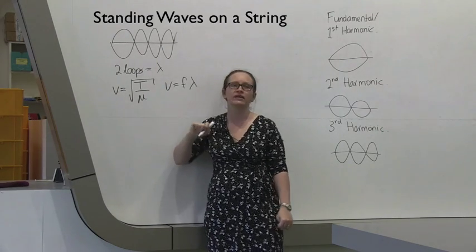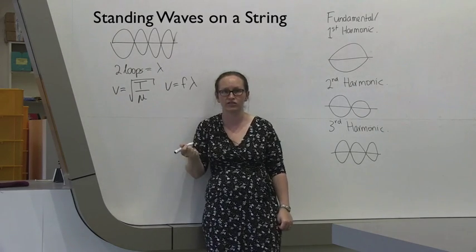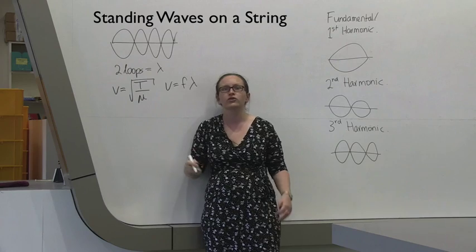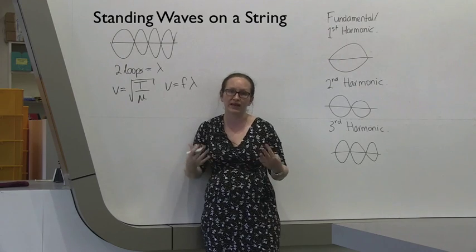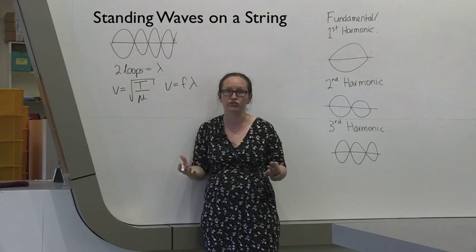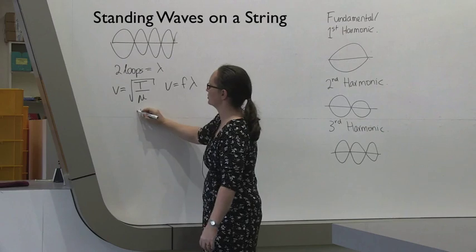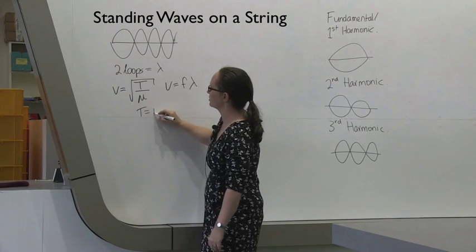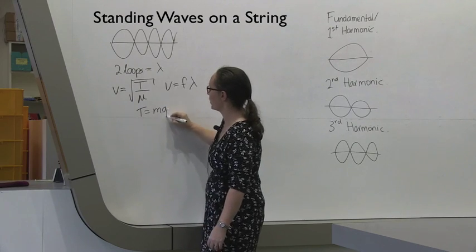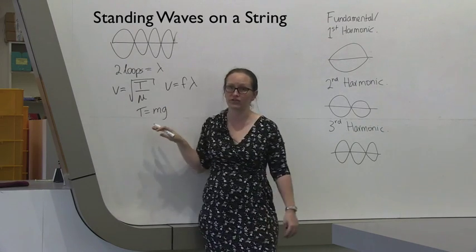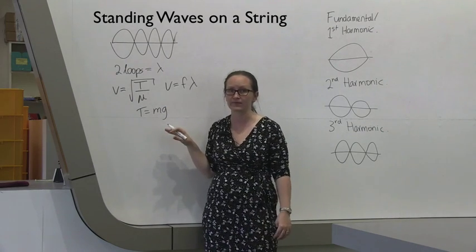T is the tension in the string. You're going to be applying tension to the string by hanging masses. So T, the tension, is just going to be equal to the weight of those hanging masses.